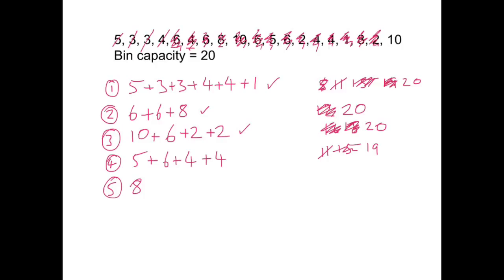And the last one, 10, has got to go into this last one. Giving me a total of 18. And that's all of the values put into the bins. You've got to make sure that it's the first available one — not just the last bin that you were working on. But always check: does it go in the first bin, then the second bin, then the third bin and so on. But that's it for that one.